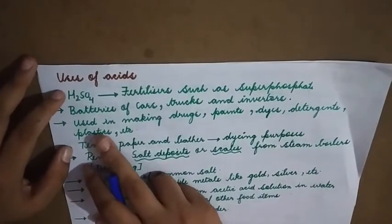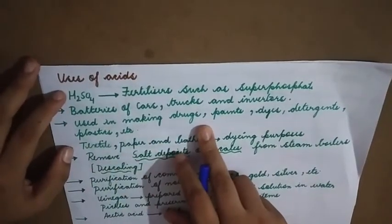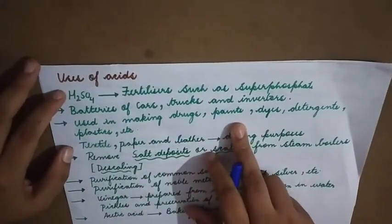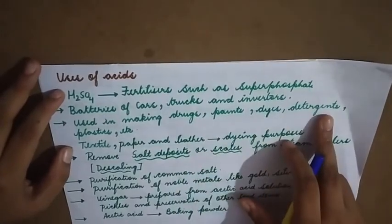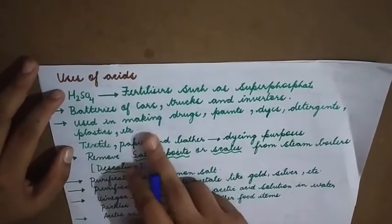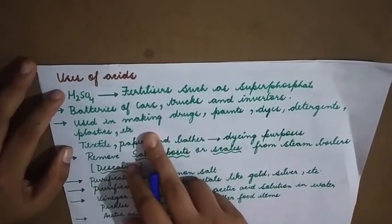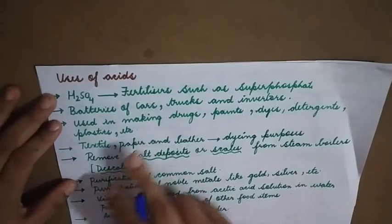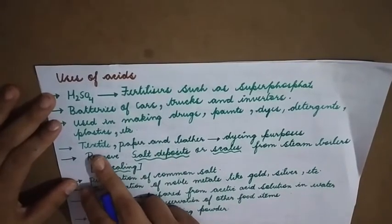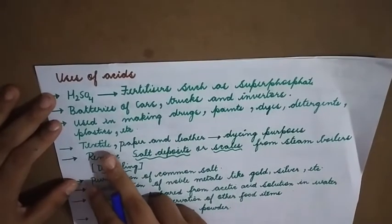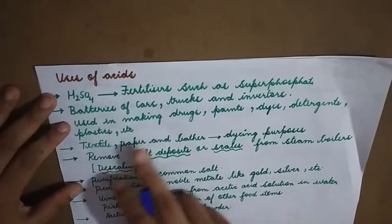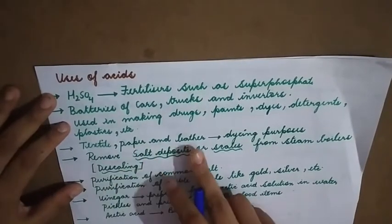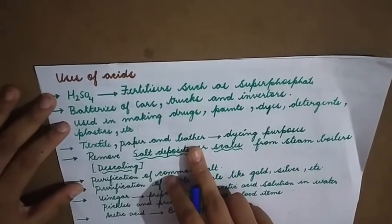Sulfuric acid is used in making drugs, paints, dyes, detergents, plastics, etc. It is also used in the textile industry — that means the cloth-making industry — as well as in the paper and leather industry.